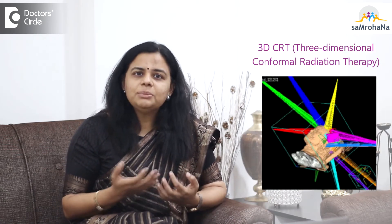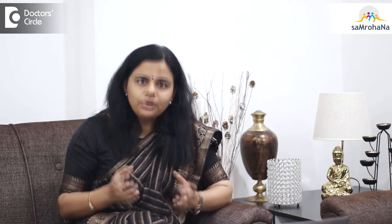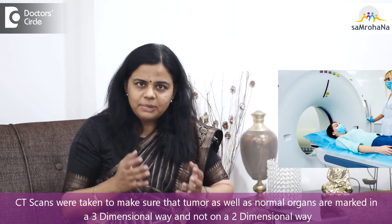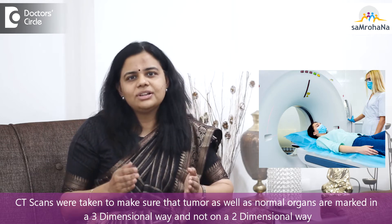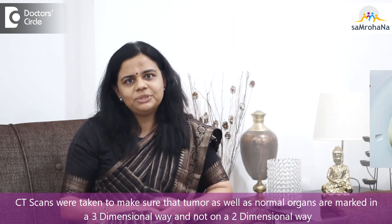In order to save the normal organs but at the same time not compromise the tumor dose, we developed something called 3D CRT, or three-dimensional conformal radiation therapy. In this technique, instead of x-rays, we started taking CT scans to make sure that the tumor as well as the normal organs are marked in a three-dimensional way and not on a two-dimensional plane.